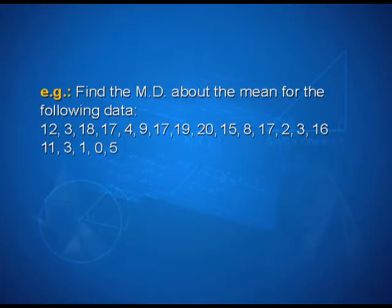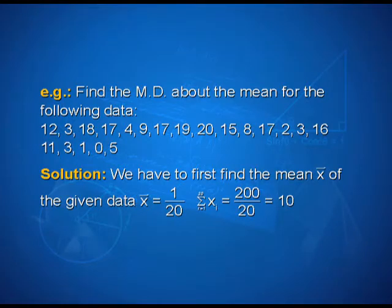Let us solve another example. Find the mean deviation about the mean for the following data: 12, 3, 18, 17, 4, 9, 17, 19, 20, 15, 8, 17, 2, 3, 16, 11, 3, 1, 0, 5. We find the mean x̄ = (1/20) × Σxi = 200 / 20 = 10.